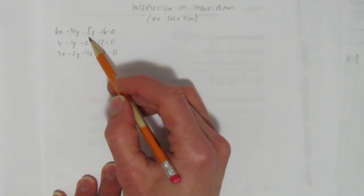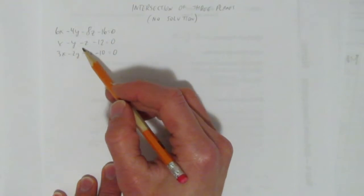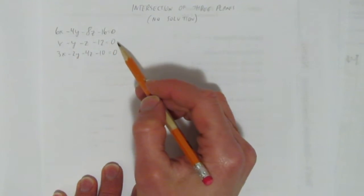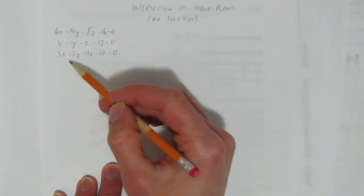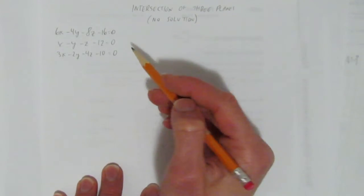Here's their equations: 6x minus 4y minus 8z minus 16, and x minus y minus z minus 12 also equals zero. They both equal zero, and 3x minus 2y minus 4z minus 10 equals zero.